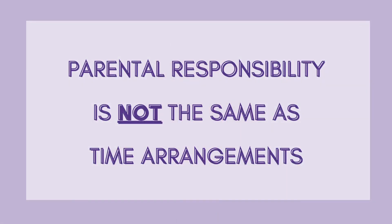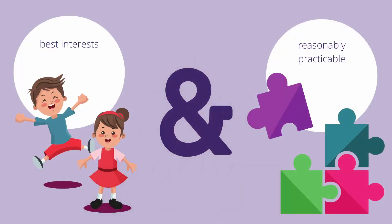Parental responsibility is often confused with the concept of time arrangements — that is, how much time each parent spends with their child. It is important to emphasise that equal shared parental responsibility does not mean equal time spent with both parents. For example, both parents might spend equal time with a child, but one parent might have sole parental responsibility for major decisions such as where the child goes to school. However, if equal shared parental responsibility is granted, the court must consider making an order that the child spends equal time with each of the parents. The court will consider whether equal time is in the child's best interests and reasonably practicable. If the court finds that equal time is not in the child's best interests and is not reasonably practicable, it must consider whether making an order for substantial and significant time with each parent is in the child's best interests and reasonably practicable.